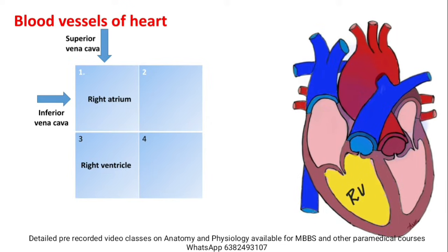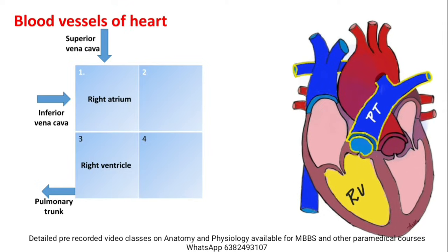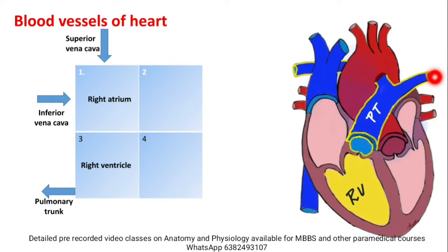The right ventricle connects to the pulmonary trunk. Here, this is the pulmonary trunk. The pulmonary trunk divides into the right pulmonary artery and the left pulmonary artery, which carry blood to the lungs. So the right ventricle of the heart is connected to the pulmonary trunk, which bifurcates into two pulmonary arteries.